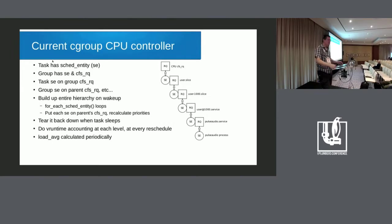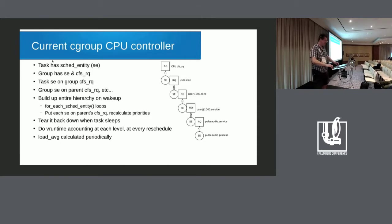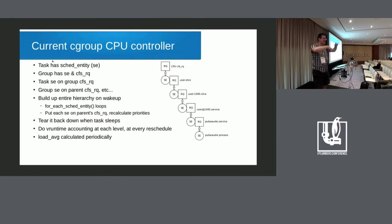Every time PulseAudio wakes up and goes back to sleep, we look at CPU time used by every entity at each level, calculate the few-runtime for each, update the number of runnable tasks at every level, and add the sched entity up the tree. That's five run queue adds every time PulseAudio wakes up, and five run queue removals when it goes back to sleep.